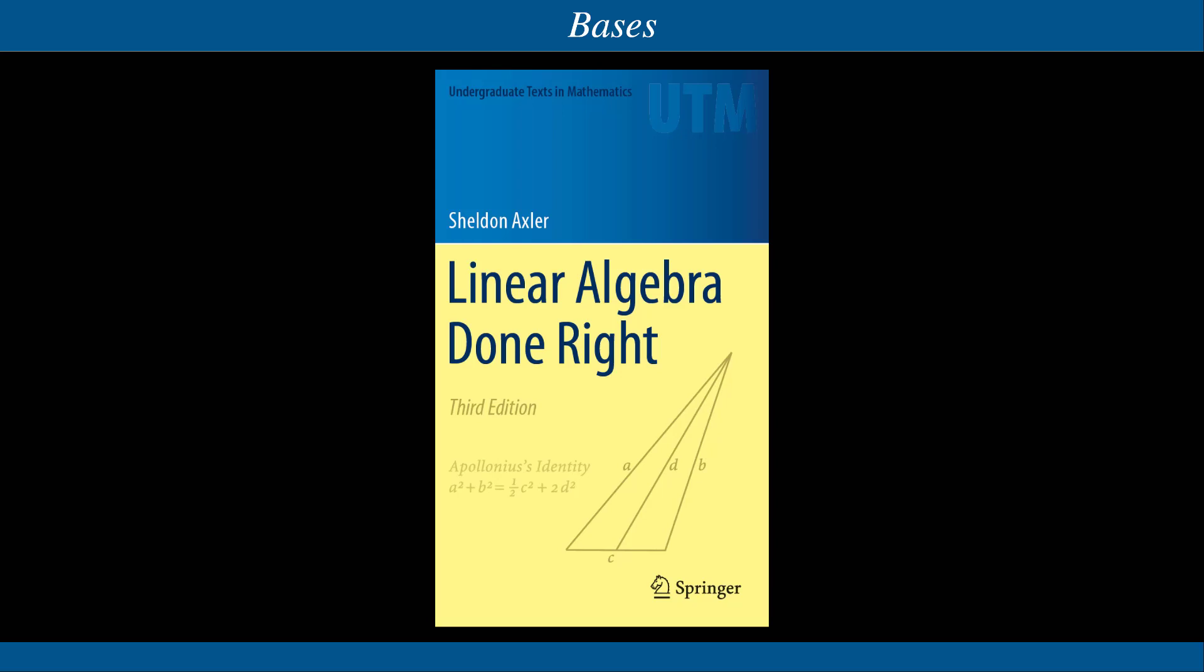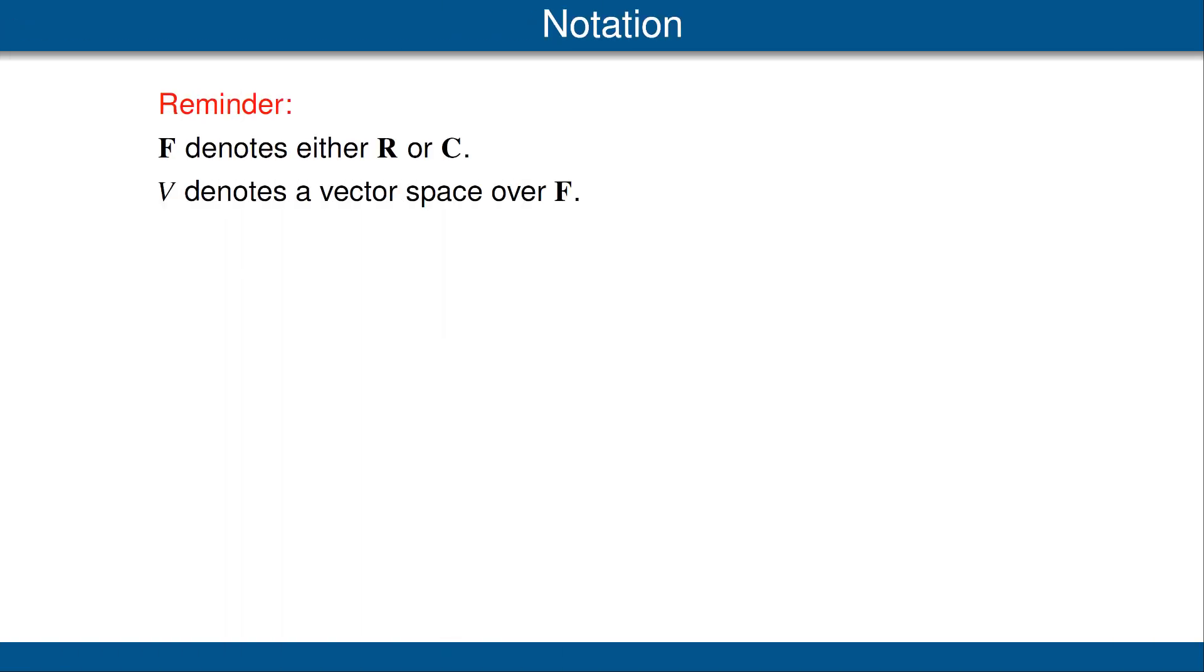Hello, I'm Sheldon Axler, the author of Linear Algebra Done Right. This video discusses the section of the book titled Bases. Let's begin with a reminder of some notation. Recall that F denotes either the field R of real numbers or the field C of complex numbers. Also, V always denotes a vector space over F.